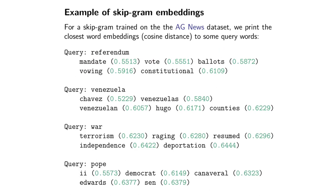All the other words in my vocabulary also have word embeddings associated with them. I calculate the distance between the 'referendum' embedding and all the other words in my vocabulary, and then I print out the top five closest words to 'referendum' and the corresponding cosine distances.